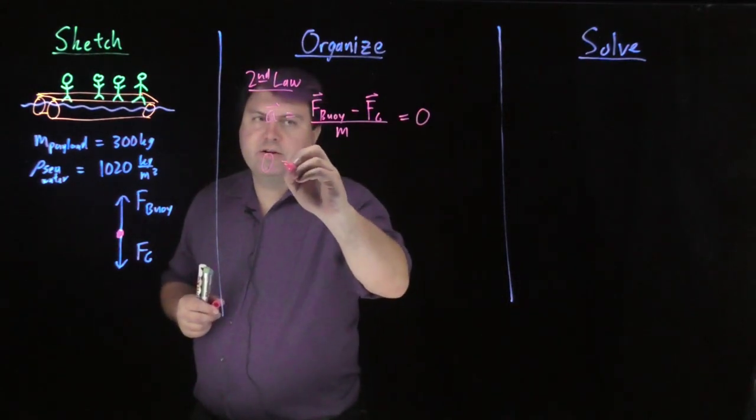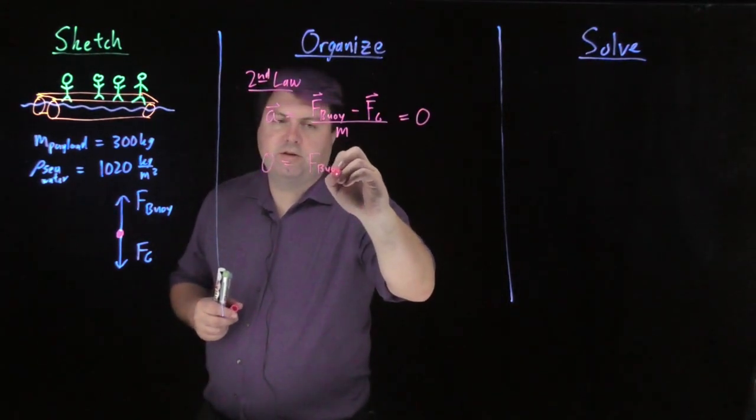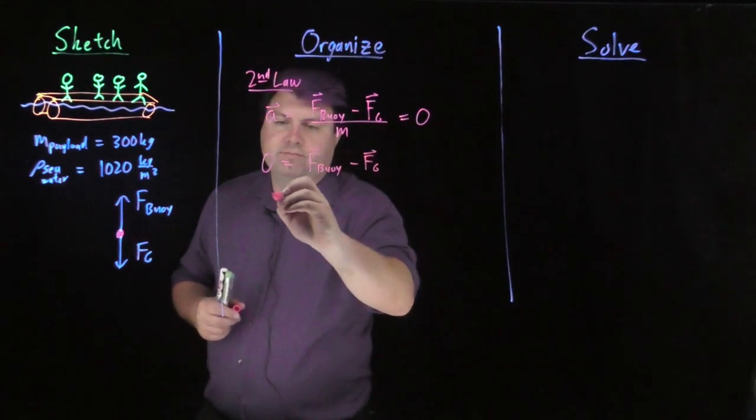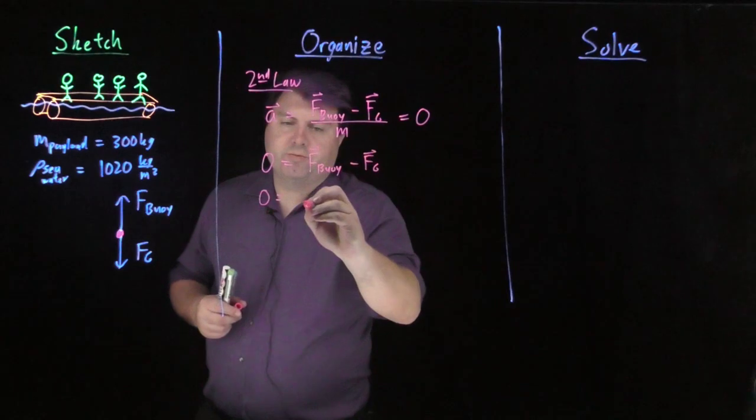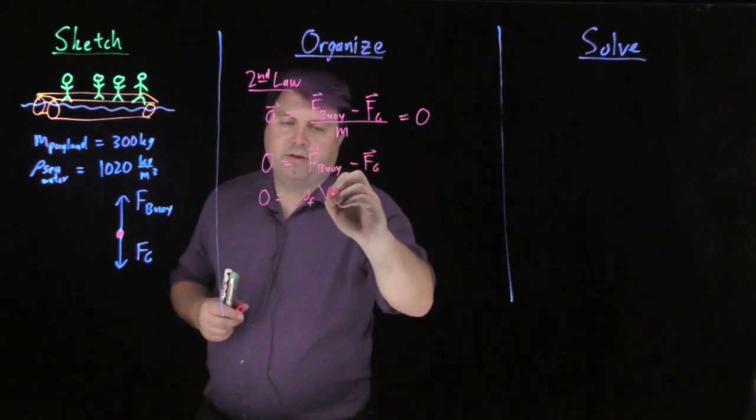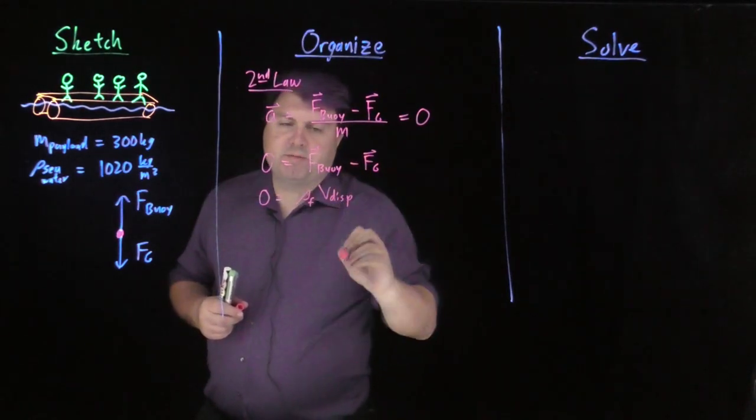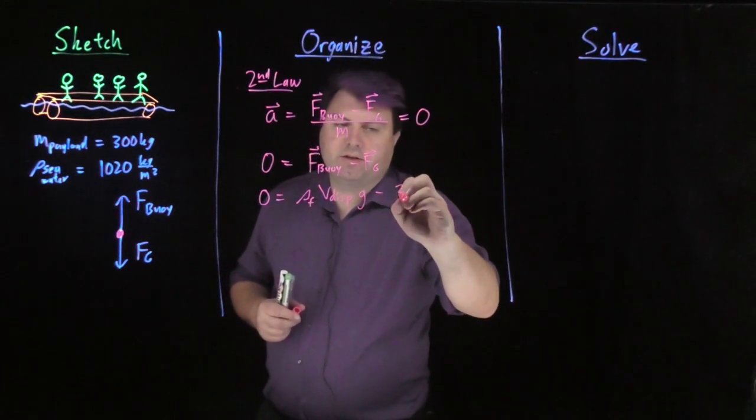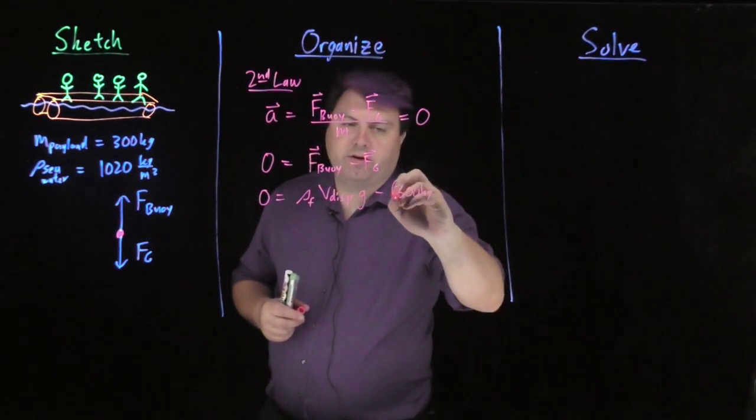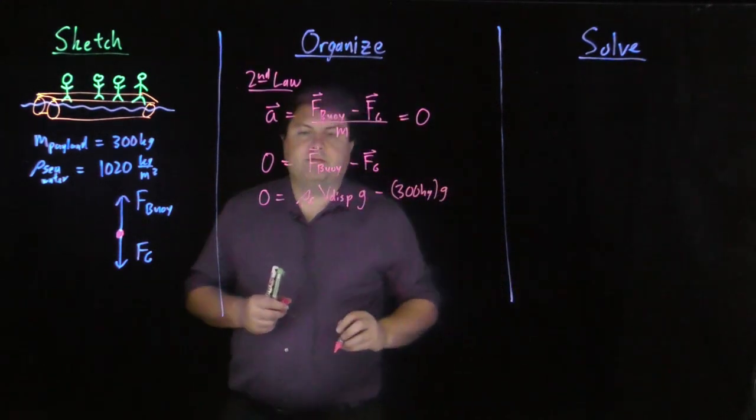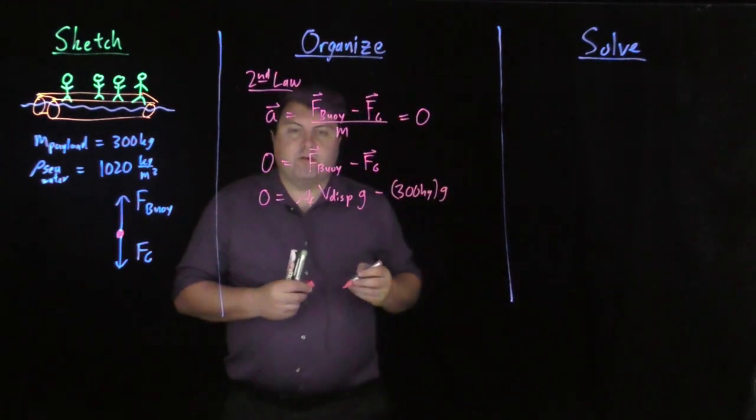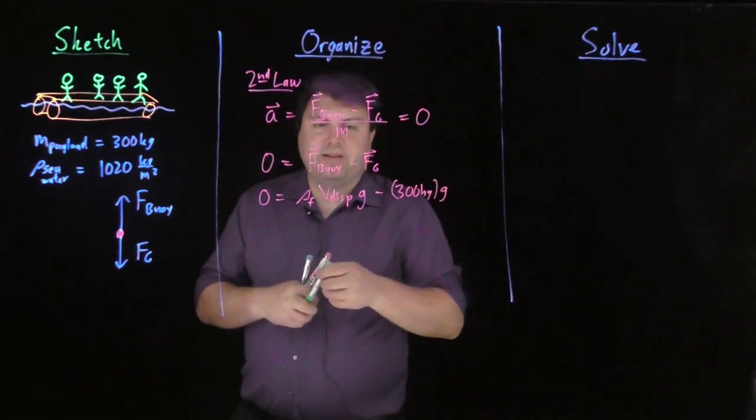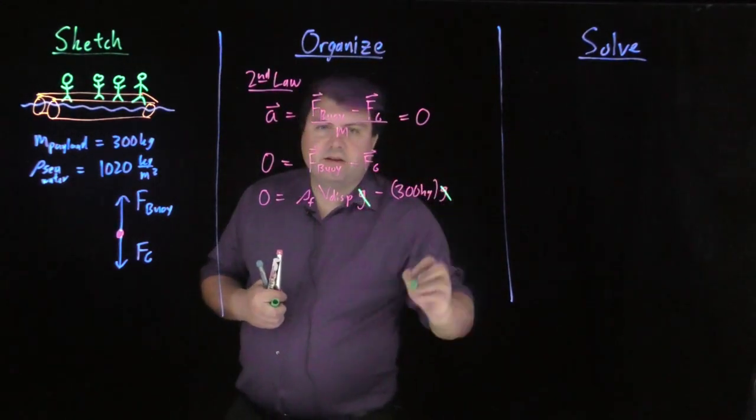And so then we can say that zero is equal to the force of buoyancy minus the force of gravity, or we can say the force of buoyancy is equal to the density of the fluid times the volume displaced times g minus 300 kilograms times g. So we can solve for this volume to displace by first off canceling the g's.